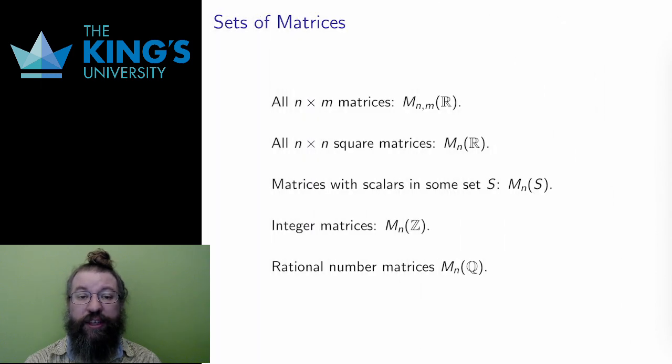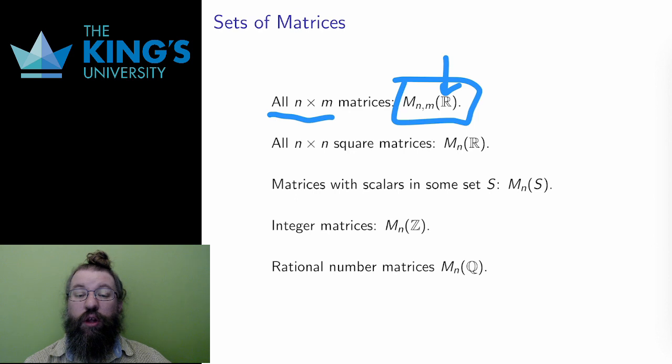There are some nice notations for sets of matrices. I'll use these to refer to matrices in general, so let me go over them. The set of all matrices of a particular size, say n by m, is written uppercase M with the subscripts n and m, and the number set in brackets. The number set shows what kind of numbers are in the matrix. In this case, the matrix has real numbers as its entries.